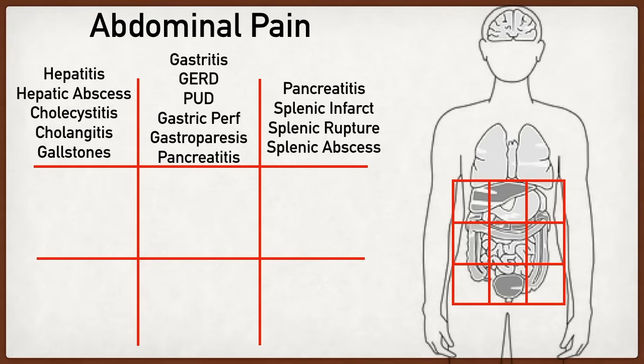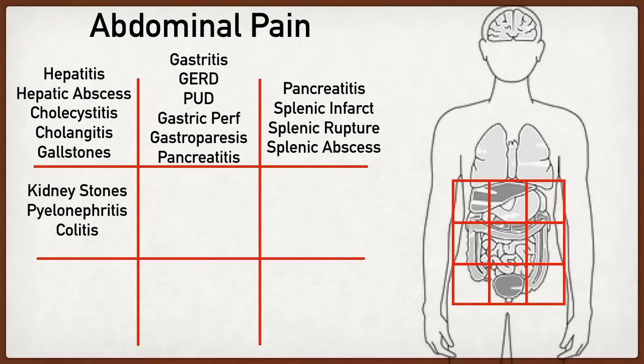Moving on to the midsection, starting with the right flank or lumbar region — the primary structures are the right kidney and ascending colon. As a result, we may see kidney stones (nephrolithiasis), pyelonephritis, a perinephric abscess, and colitis, especially if it involves the ascending colon.